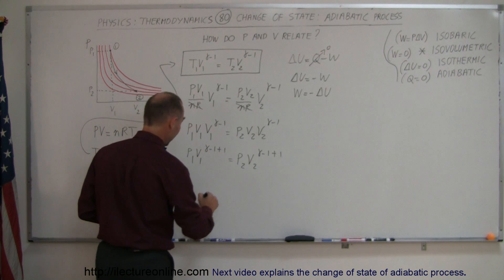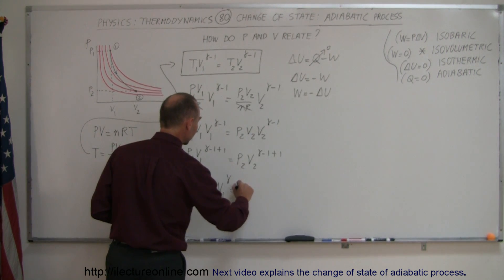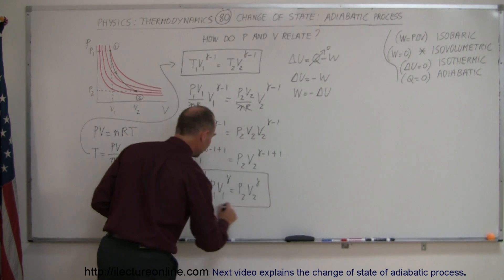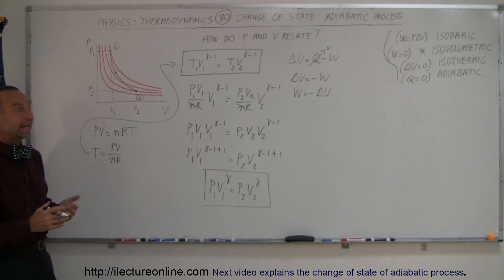Notice then that the ones cancel out and we end up with P1 V1 to the gamma equals P2 V2 to the gamma, and here we now have a new relationship between two of the state variables for the gas in an adiabatic process.